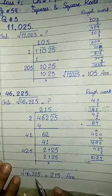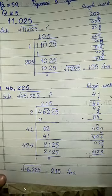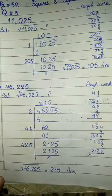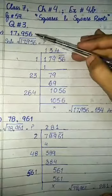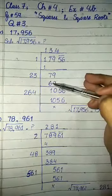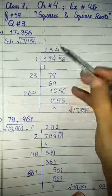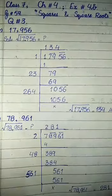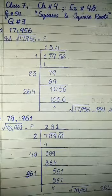So the square root of 46,225 is equal to 215. As a tip: if you have any number that is a perfect square ending in 5, then the square root answer also ends in 5. Now you can easily solve part number 4 and part number 5, which are 17,956 and 78,961, by following this same method — pairing the digits, finding the close answer, doubling the quotient for the partial divisor, and multiplying to check. These are the steps to find square roots using the division method. Keep on doing hard work. Stay blessed. Allah Hafiz.